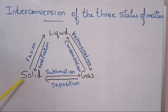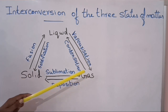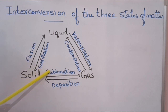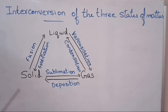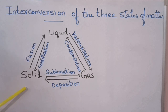The process of converting solid to gas is called sublimation — for example, sublimation of ammonium chloride, camphor, naphthalene, etc. And the process of converting gas back to solid is called deposition.